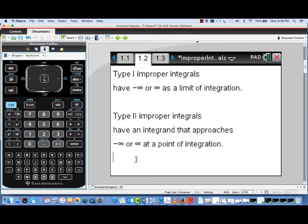Just a quick reminder, there's two types of improper integrals. What's called Type 1 has minus or positive infinity as one of the limits of integration. A Type 2 improper integral is going to have an integrand that has a vertical asymptote at some point of integration.